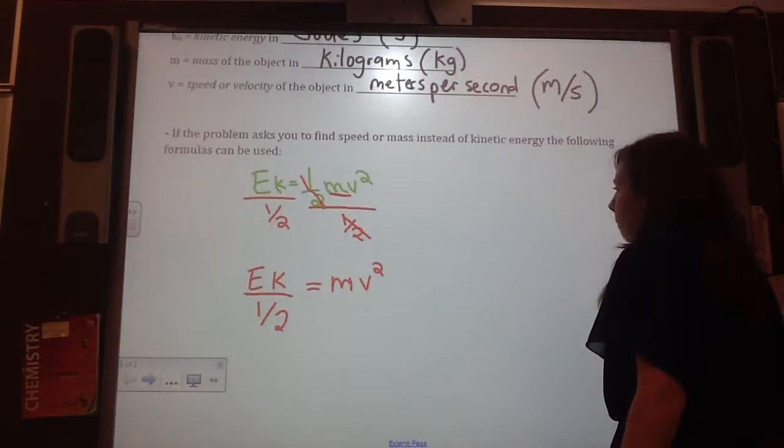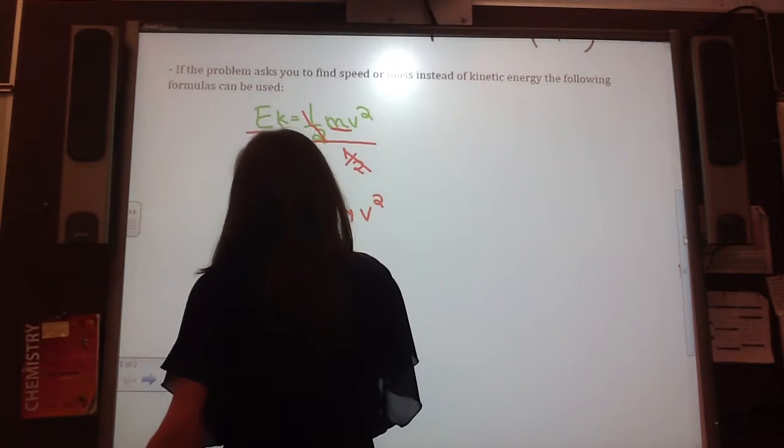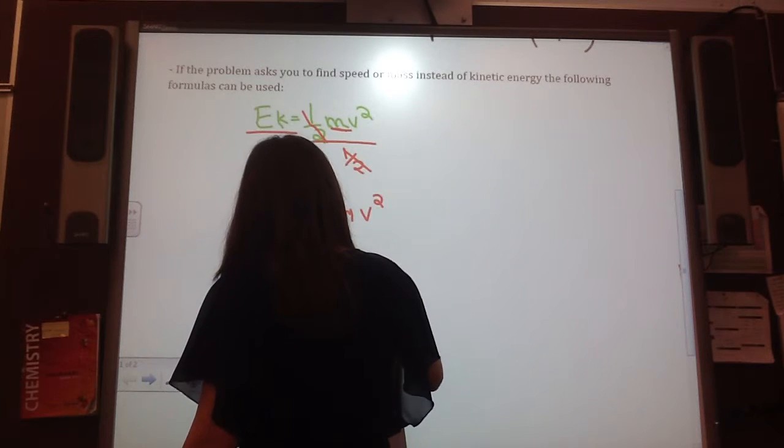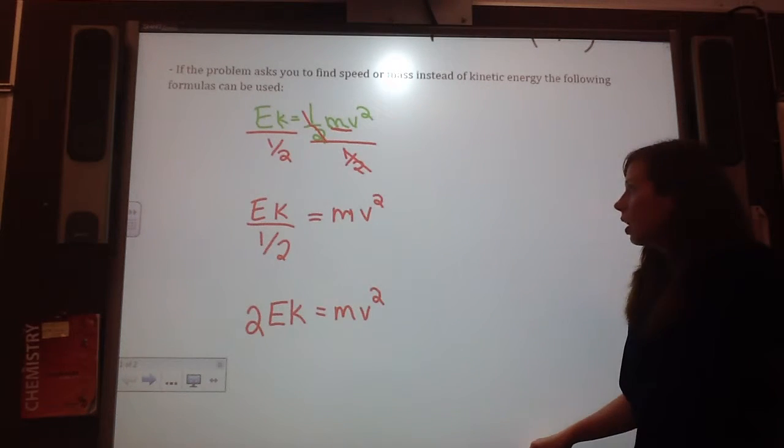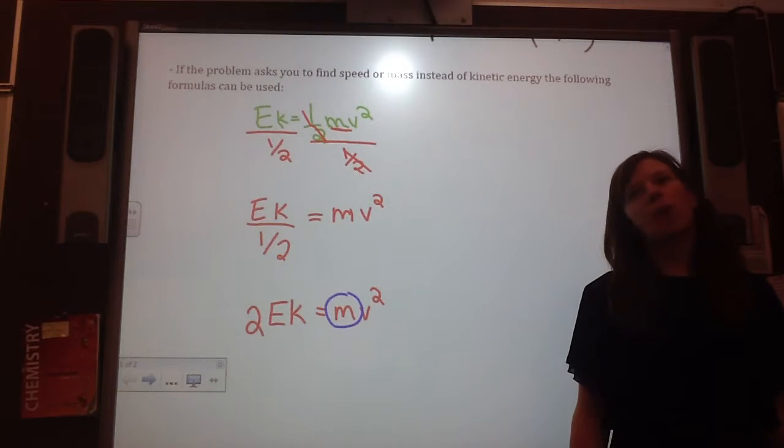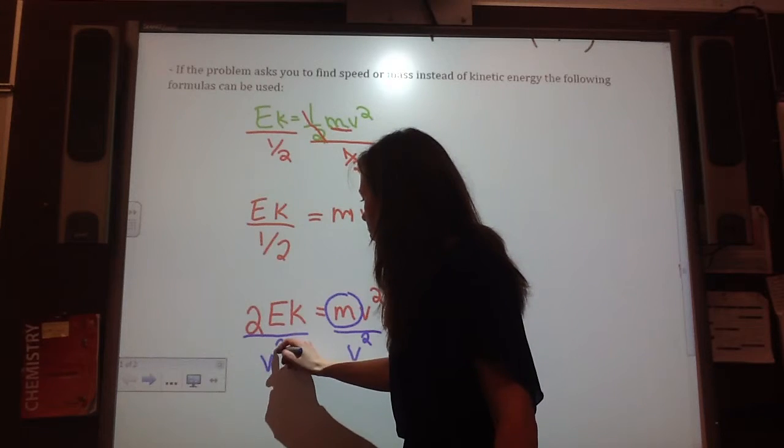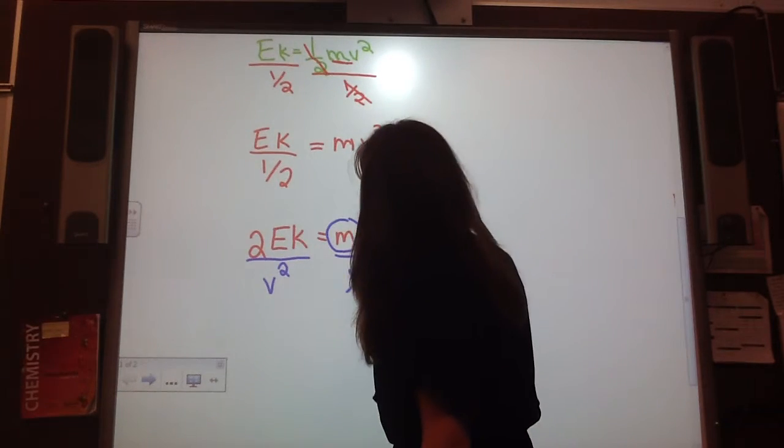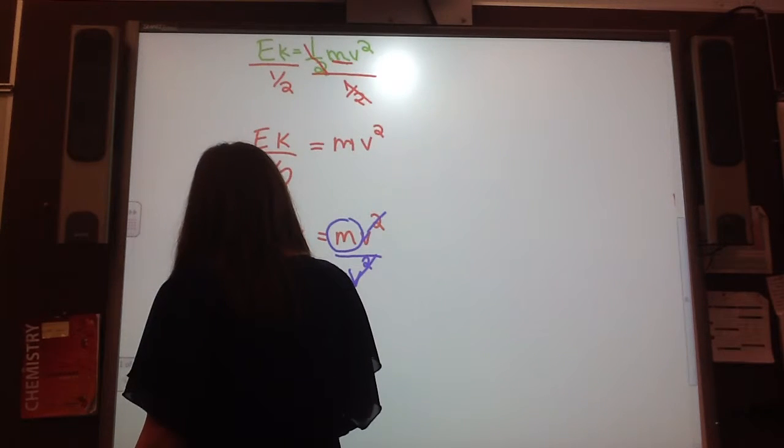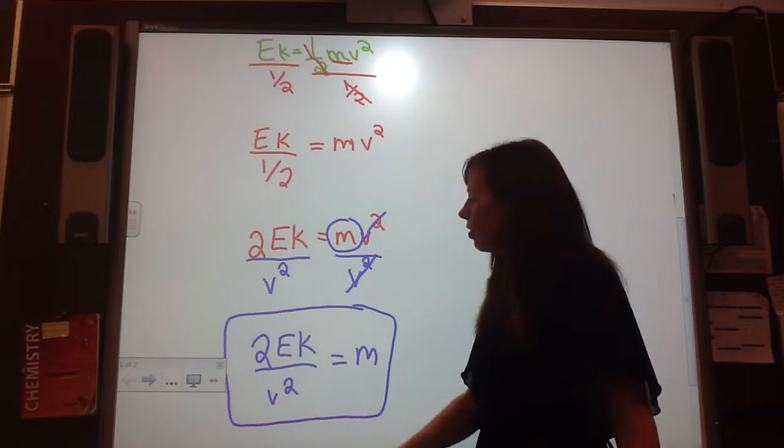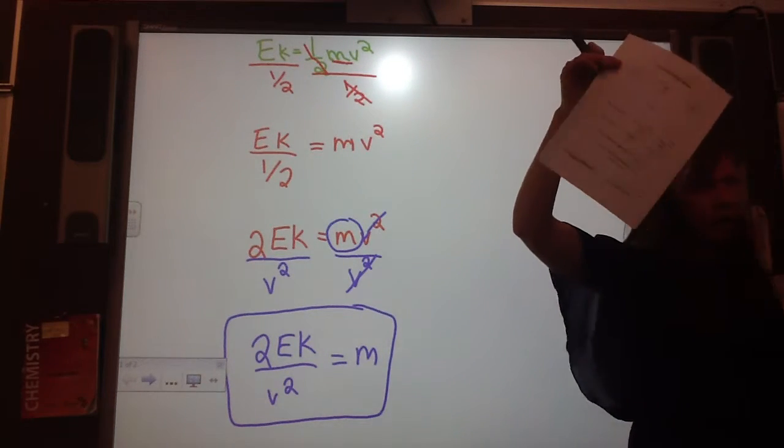So I said I want to solve for m. Dividing by half is the same as multiplying by two, so I can say this is 2Ek is equal to mv squared. I said I wanted to solve for m, m right now is multiplied by v squared. What's the opposite of multiplying by v squared? Divide by v squared. So the v squareds cross off, and I'm left with 2Ek divided by v squared is equal to m. Look at your formula sheet. Can you find that on the one that I just gave you today? Yeah? Okay.